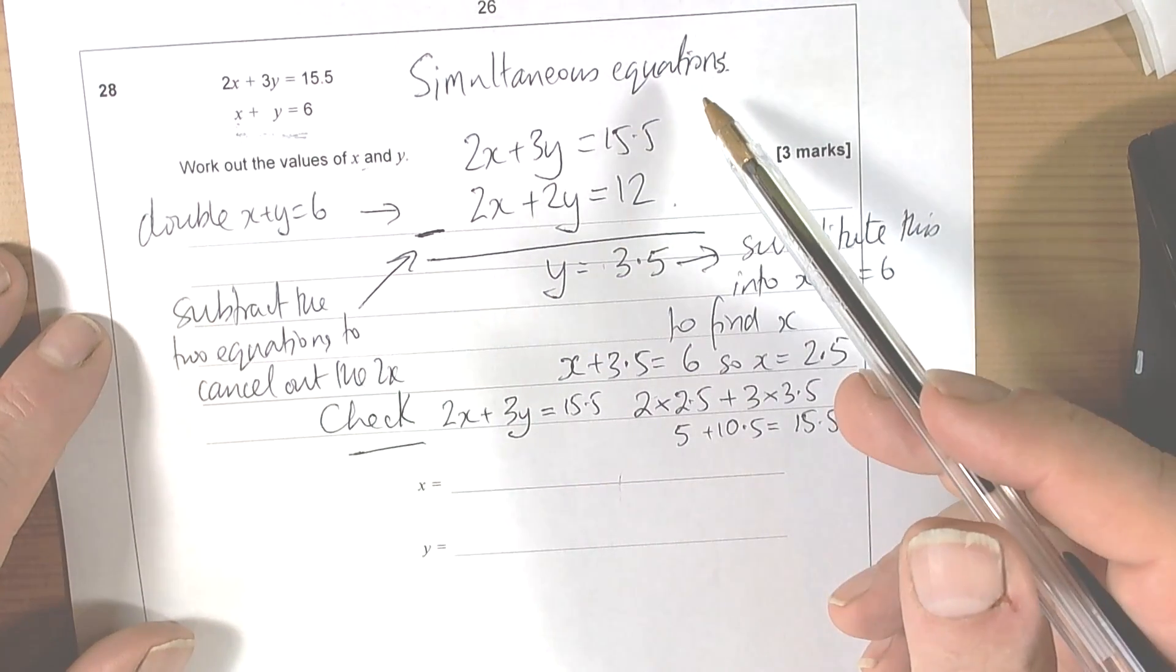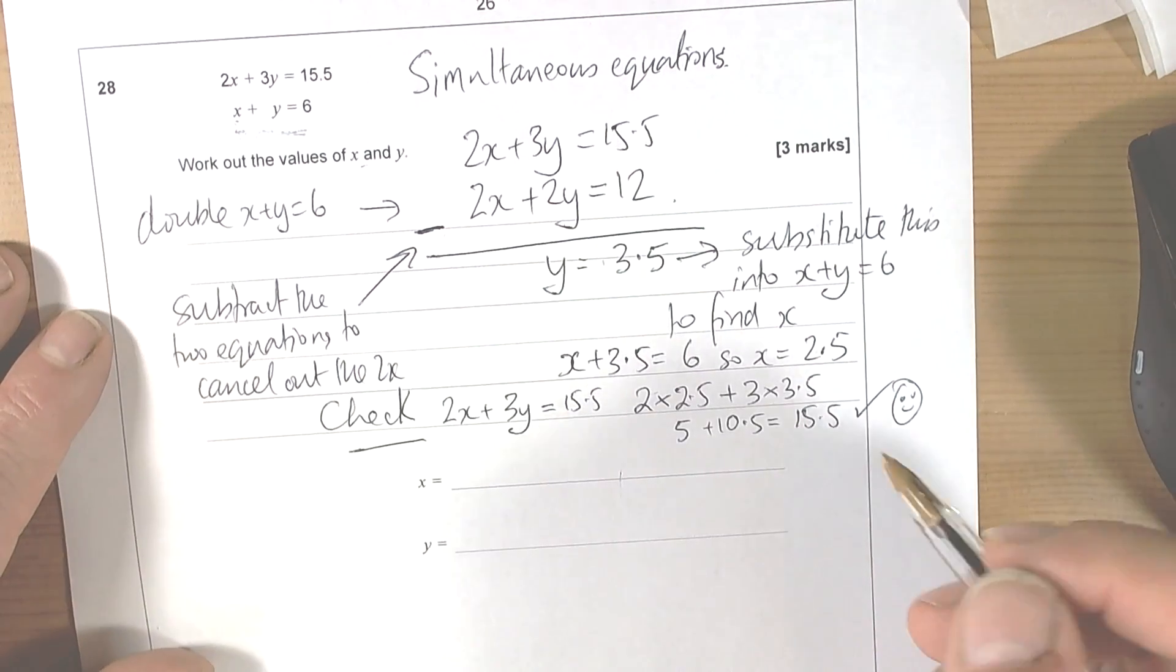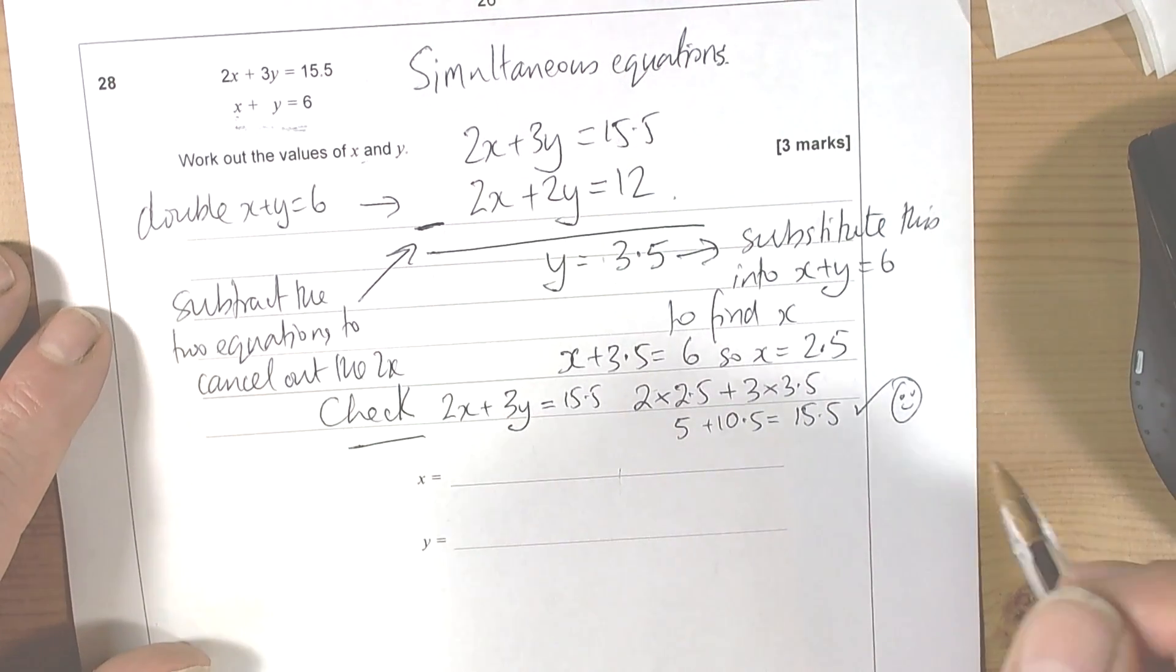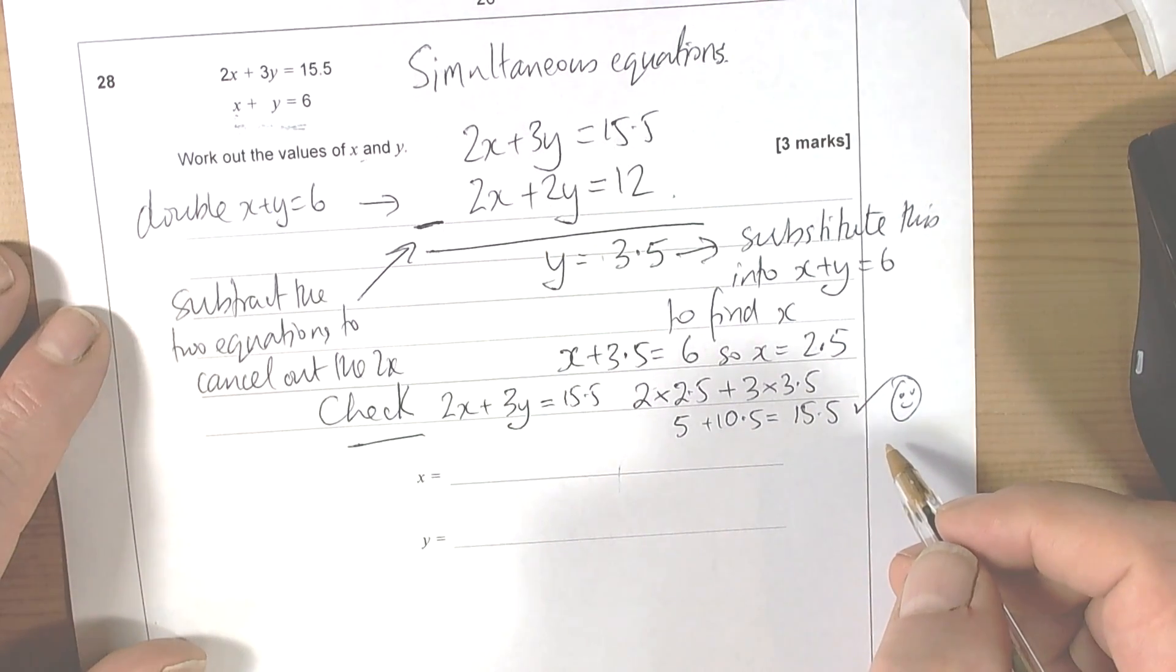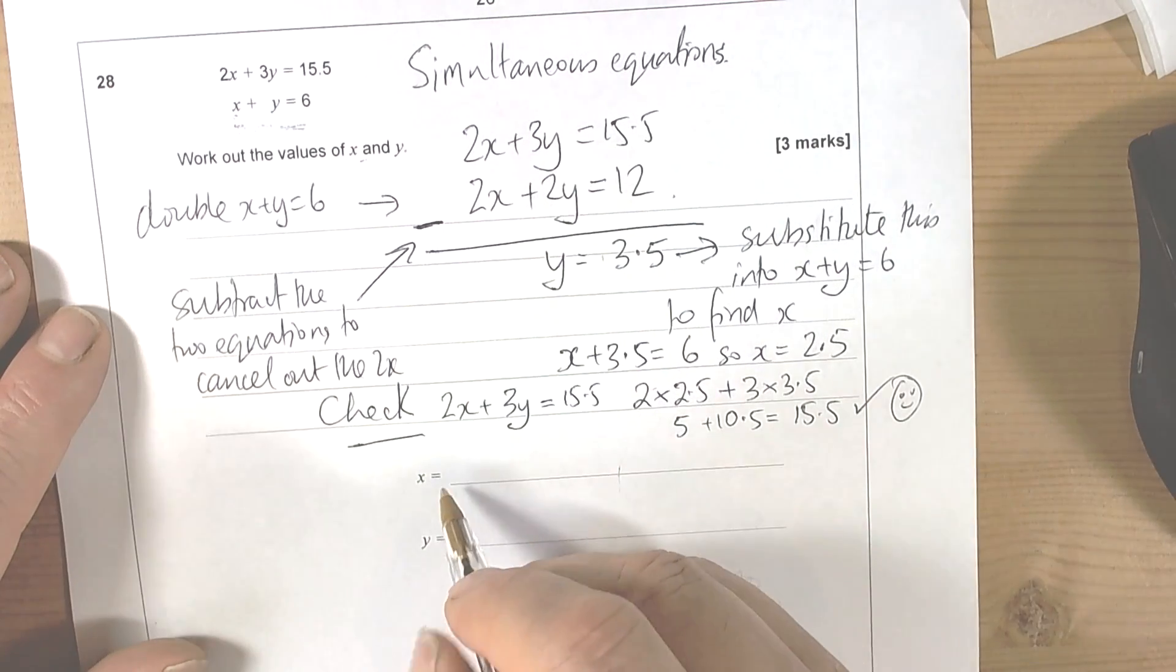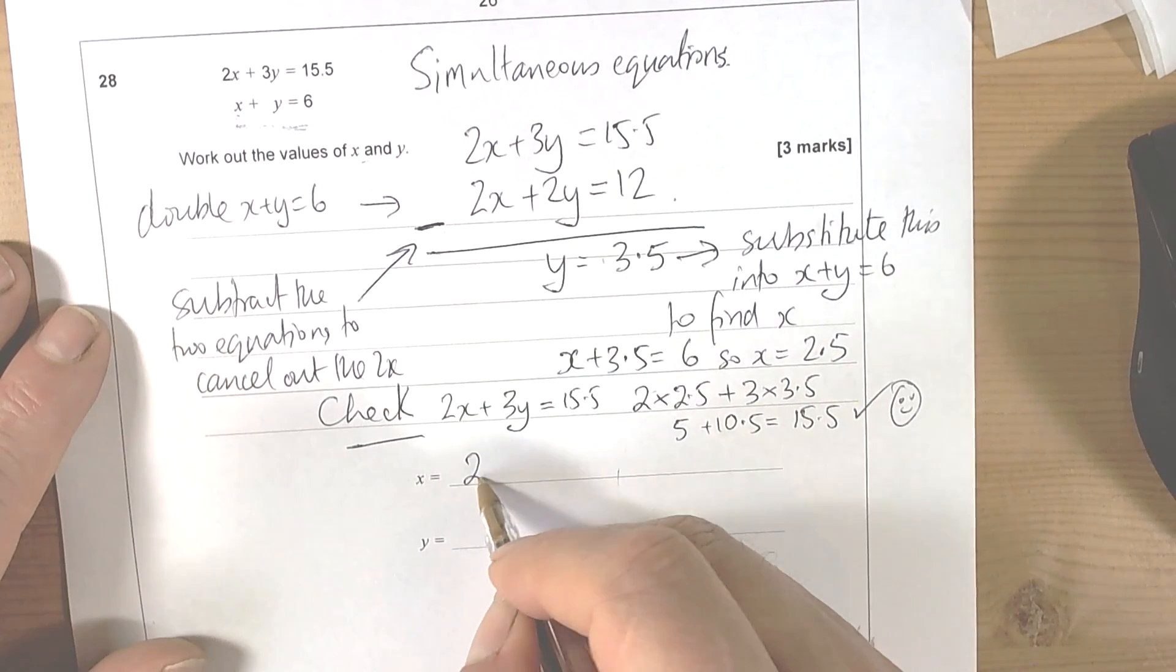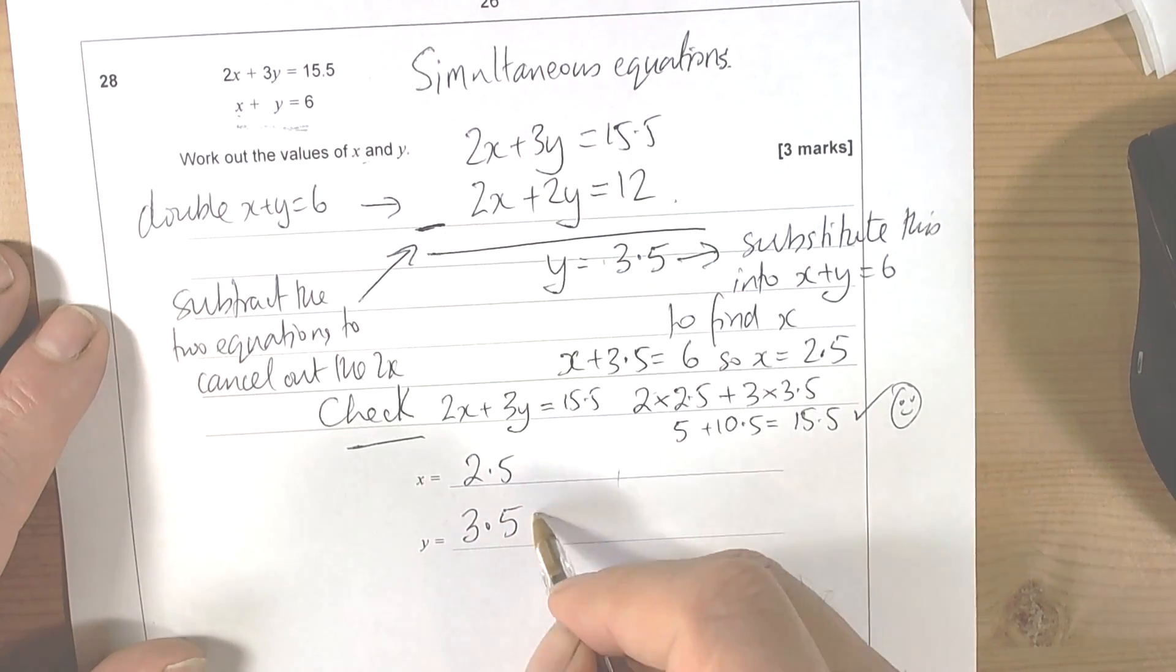So simultaneous equations, quite a popular topic, worth practicing because again it practices solving equations at the same time, so worth spending some time with it. So we found the x value was worth two and a half and the y value was worth three and a half.